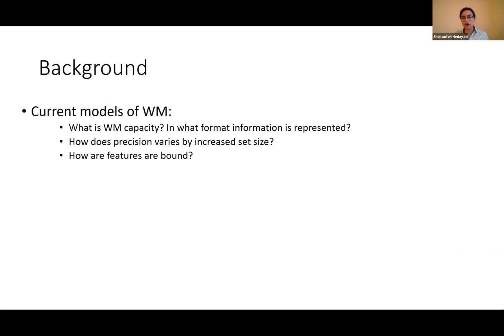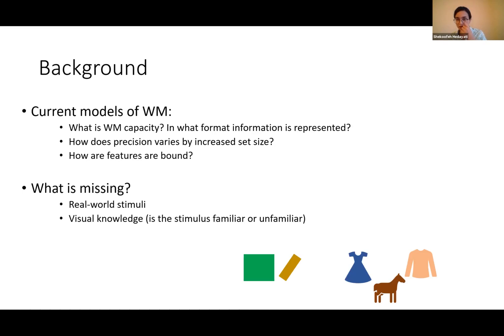Current models of working memory are concerned with questions about what is the capacity of working memory, how many items can be represented, how precision varies if the set size increases, and how features are bound. However, what is missing is that most of these models do not use real-world stimuli. They use things like colored squares or oriented bars rather than more ecologically valid stimuli. Also, the importance of visual knowledge has not been paid attention to. These models do not really allow for encoding of familiar versus unfamiliar items.